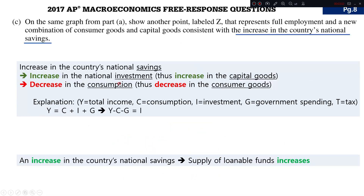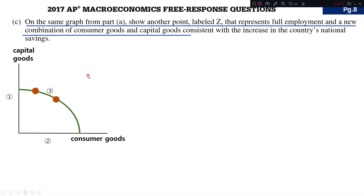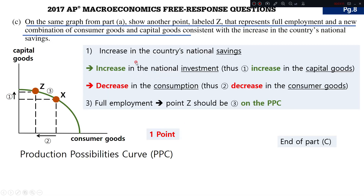Question C: with an increase in national savings, we have a decrease in consumption, thus a decrease in consumer goods. This results in an increase in capital goods and a decrease in consumer goods. You should draw and label this new point as Z on the PPC, reflecting the shift toward more capital goods. One point for question C.